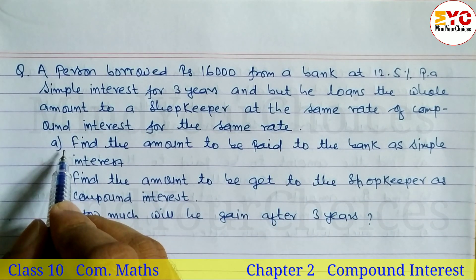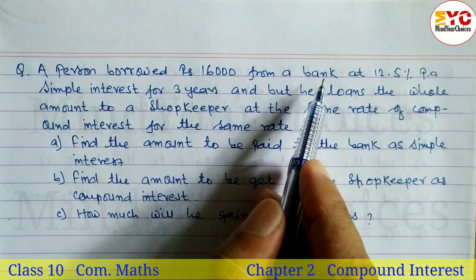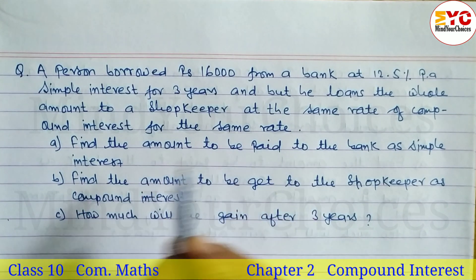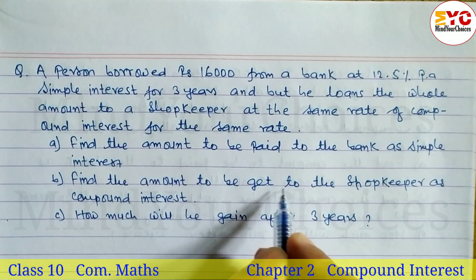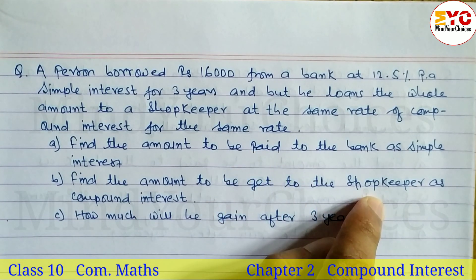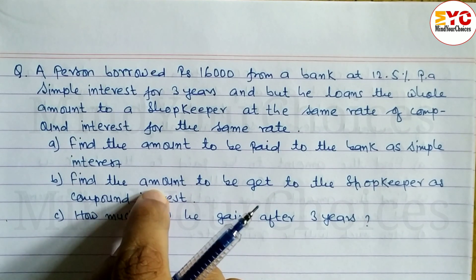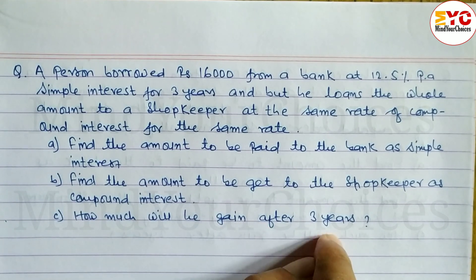The questions are: (a) Find the amount to be paid to the bank as simple interest, (b) Find the amount to be received from the shopkeeper as compound interest, (c) How much will he gain after 3 years?